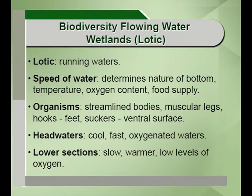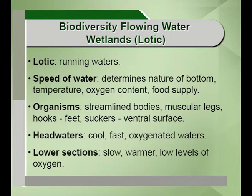The biodiversity found in the flowing water bodies or lotic water bodies differs significantly. The speed of the water is an important factor, as it determines the nature of the bottom, the kind of organisms that can adapt, the amount of oxygen content, food supply and temperature in the water. Organisms are streamlined to adapt to these fast-moving waters, having muscular legs, hooks and suckers on the ventral surfaces of their bodies. Headwaters can be cool, fast and highly oxygenated, while lower sections are slower, slightly warmer and have lower oxygen levels.